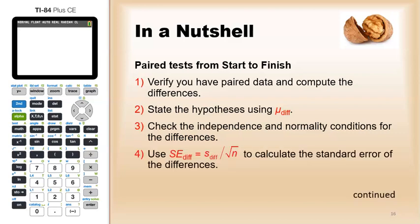Standard error is essentially the same: standard deviation over the square root of n, that is the standard deviation over the square root of the sample size. And by this I mean the standard deviation of the differences, and that would be the standard error of the differences.